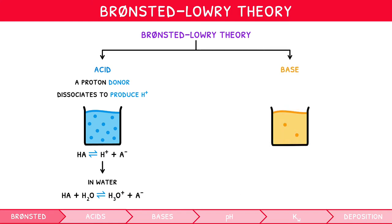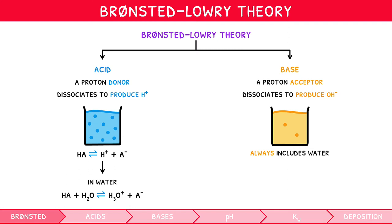A base, i.e. alkali, is defined as a proton acceptor, i.e. a species which dissociates to produce OH- ions. Since bases must accept a proton, their dissociation equations are always written to include water, as B + H2O → BH+ + OH-.